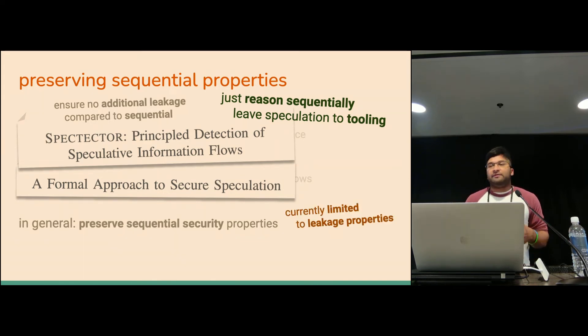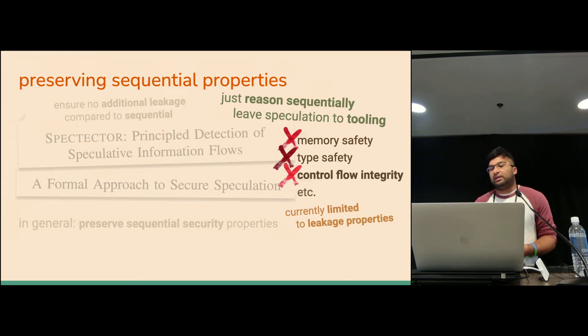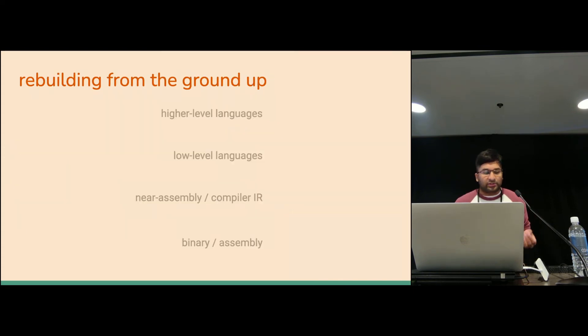Unfortunately, the work that we've seen so far has kind of been limited to security properties based on leakage models. Making sure that your programs don't leak anything more. But there are a whole bunch of other high-level security properties as well that Spectre has destroyed. Everything from general memory safety, type safety, control flow integrity, and so on. These are all very important high-level properties that have been destroyed because Spectre is such a fundamental low-level bug.